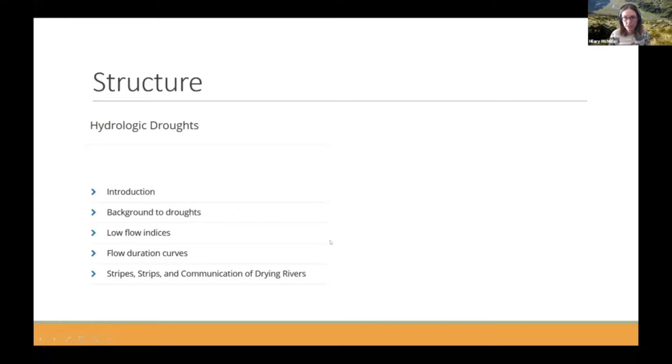So in terms of the structure of our module, this is how it looks like. So it's basically got a background section. It's then got two sections on low flow indices and flow duration curves where the students are working with data and processing it. And then it's got a final section on visualizing and communicating their work.